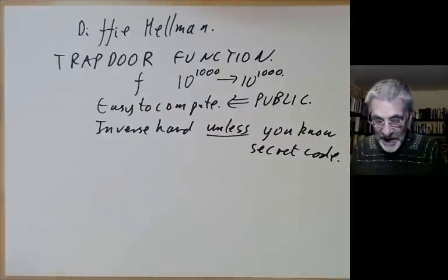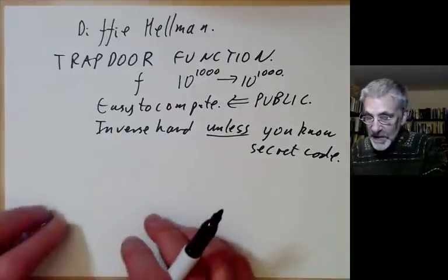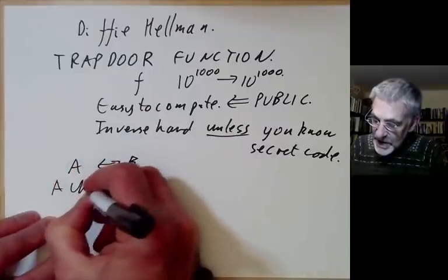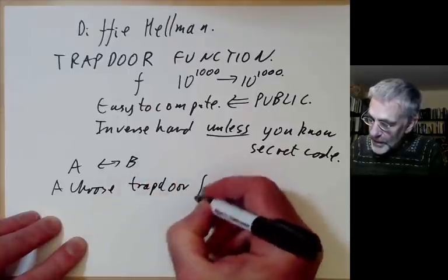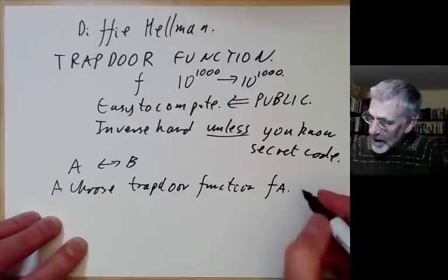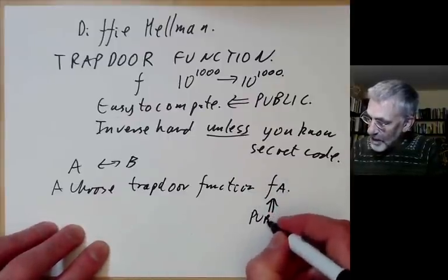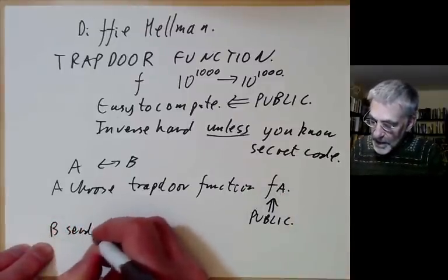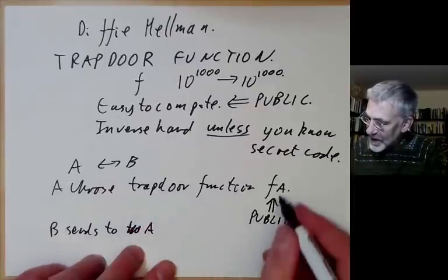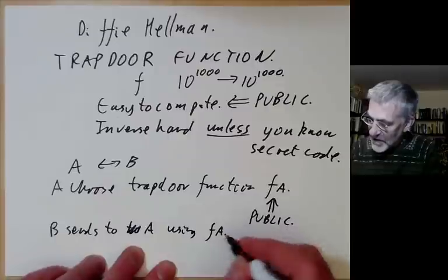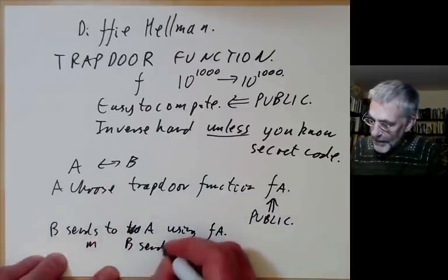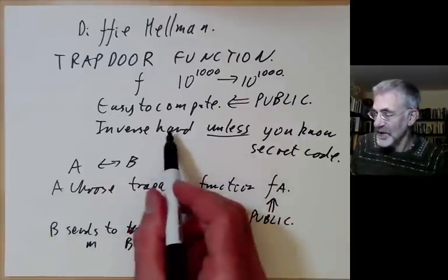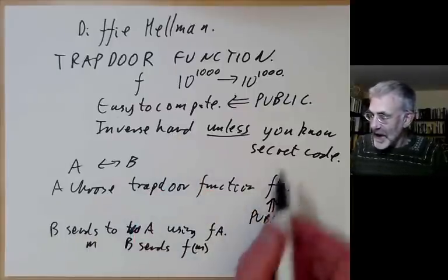The inverse can be computed easily only if you know some secret about f. Here's how you use this to communicate: A chooses a trapdoor function f_A and makes it public. B sends messages to A by encoding them using f_A. If B's message is m, then B sends f(m). Eve intercepts f(m) but can't decode it, while A can decode it because A knows the secret method.